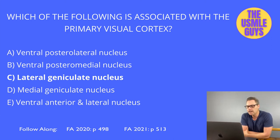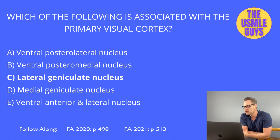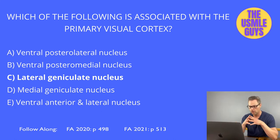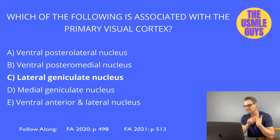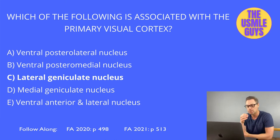The medial geniculate nucleus receives input from the superior olive and inferior colliculus of the tectum, is responsible for hearing, and projects to the primary auditory cortex in the temporal lobe. Finally, the ventral anterior and lateral nuclei receive input from the basal ganglia and cerebellum, are responsible for motor control, and project to the motor cortices of the frontal lobe.